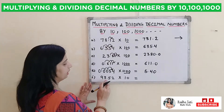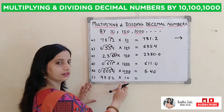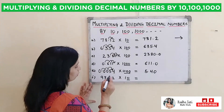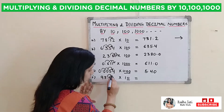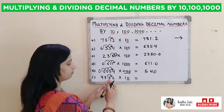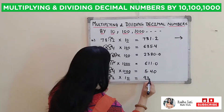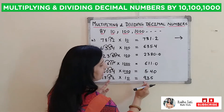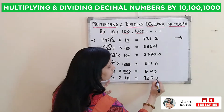Next is 93.52 multiplied by 10. In 10 there is only 1 zero. The decimal will shift to the right hand side by only 1 place. Our decimal will come after 5, so the answer will be 935.2.